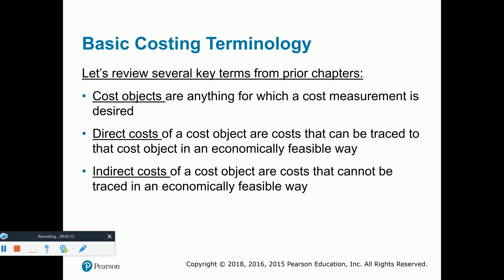Let's review concepts from prior chapters. First, a cost object is basically anything we are trying to measure a cost for — a good example is an inventory item. Direct costs are those costs we can directly trace to a particular item, such as direct materials, where we know exactly which materials went to each product, or direct labor — the assembly line workers — where we know exactly which items they were working on. Versus an indirect cost, where there needs to be some sort of allocation method.